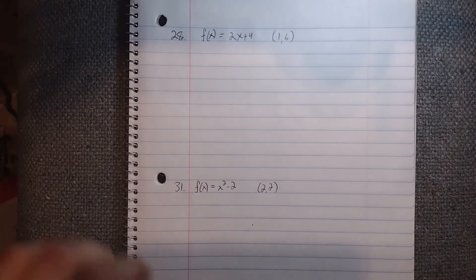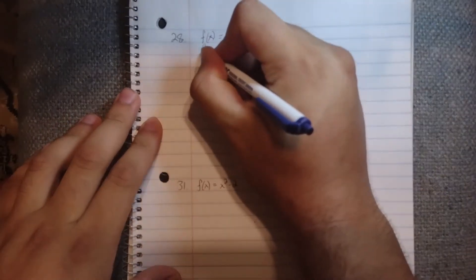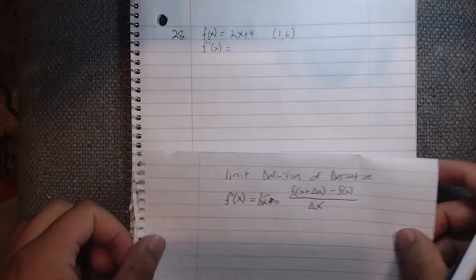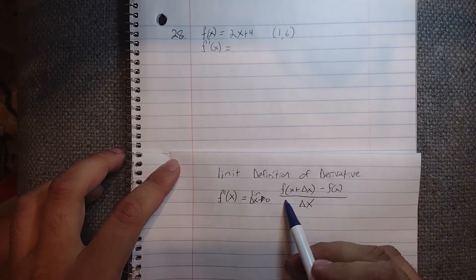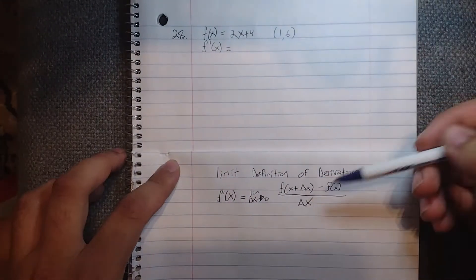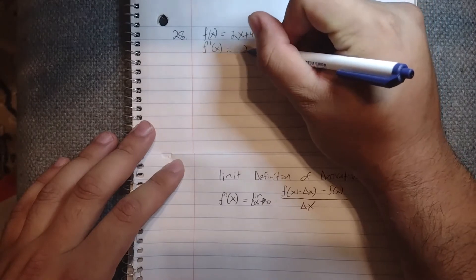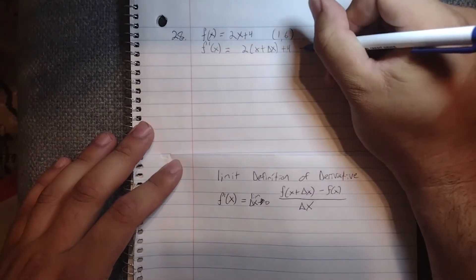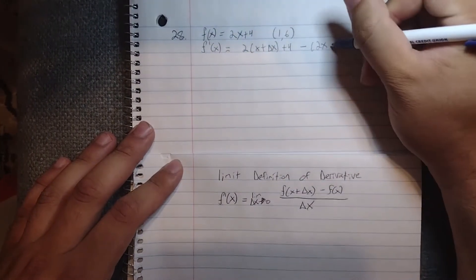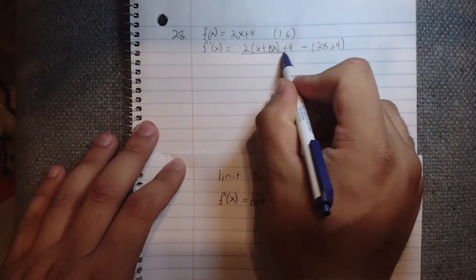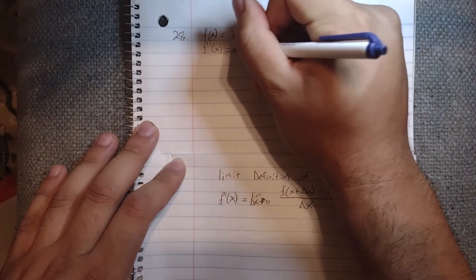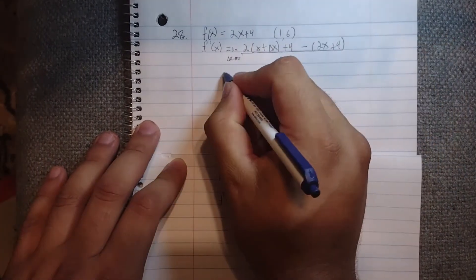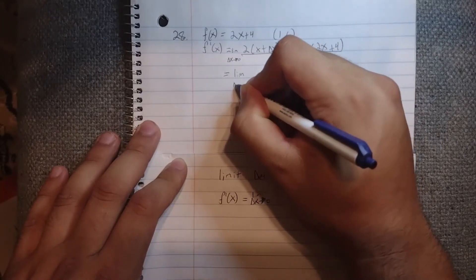Starting with problem 28, we want to calculate f prime of x. Using the limit definition of the derivative, f of x plus delta x means we replace x with x plus delta x, giving us 2 times (x plus delta x) plus 4, minus our original function 2x plus 4, all divided by delta x. Of course, our limit is up here too.